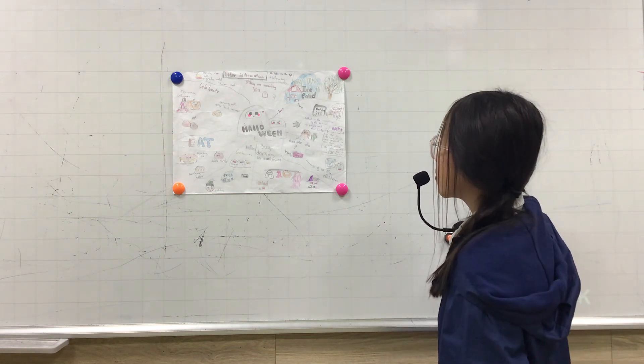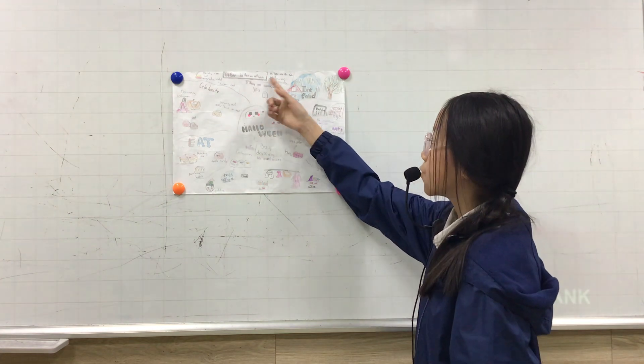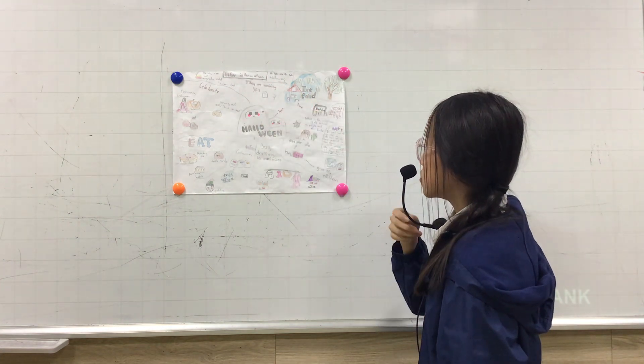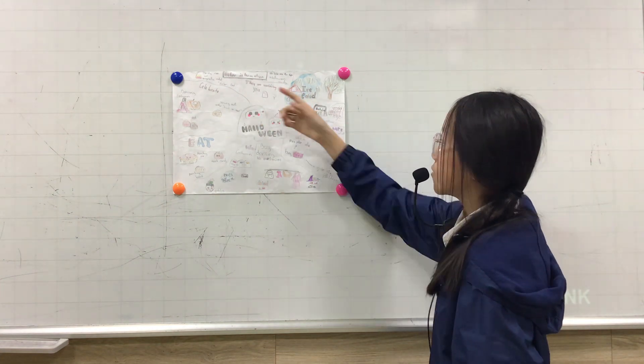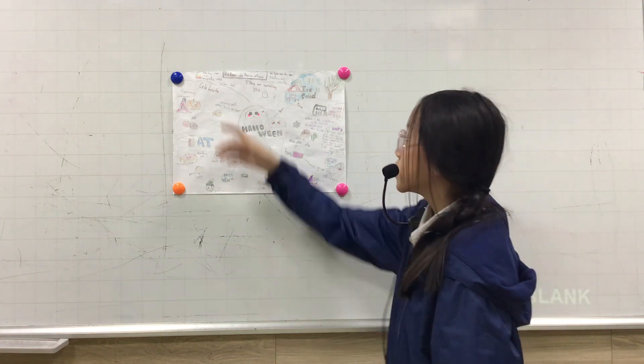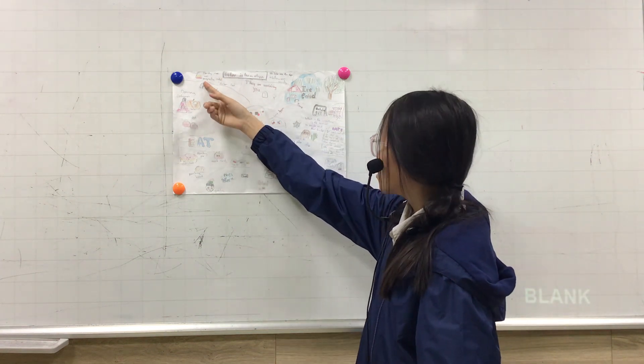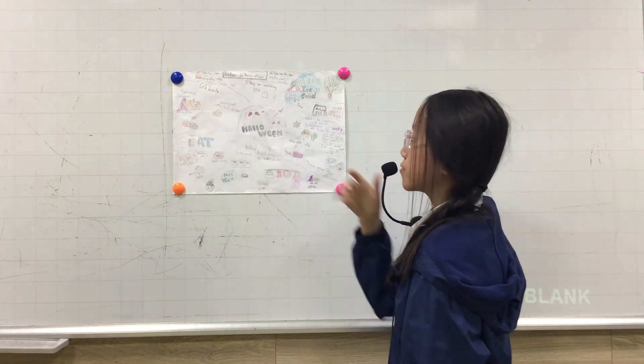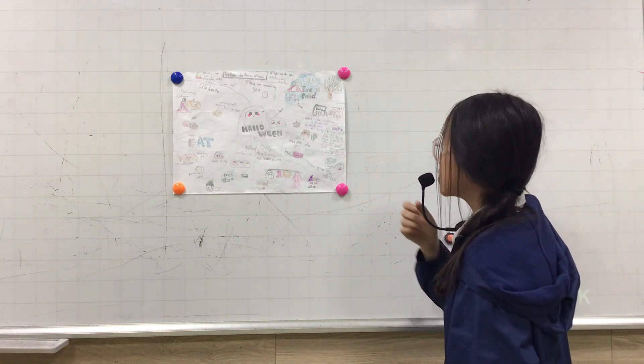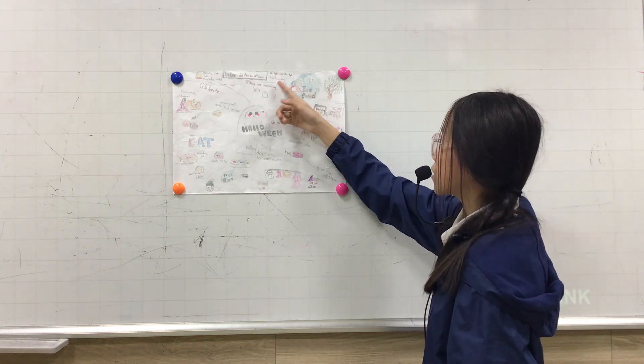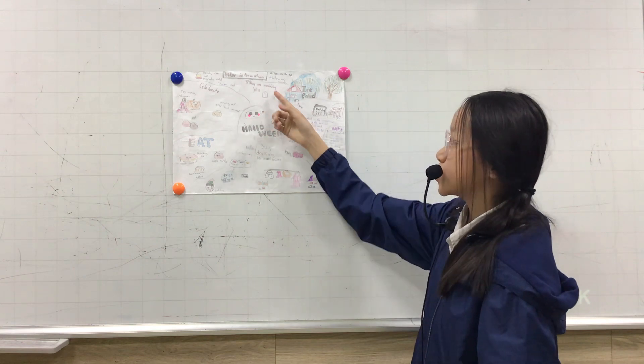Finally, I want to tell you about interesting facts. Candy corn was originally called chicken feed. Skittles are the top Halloween candy.